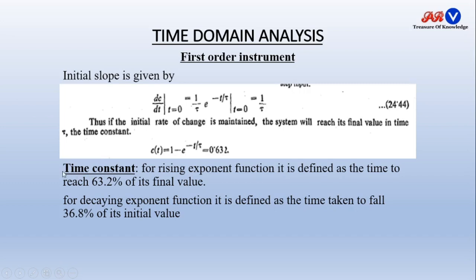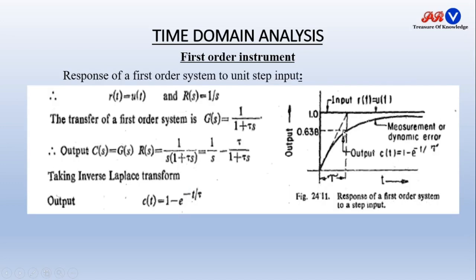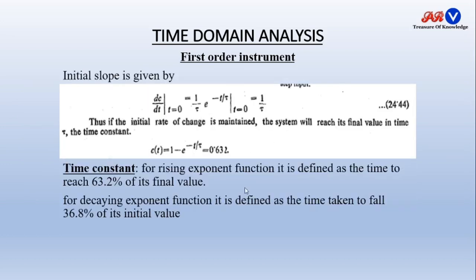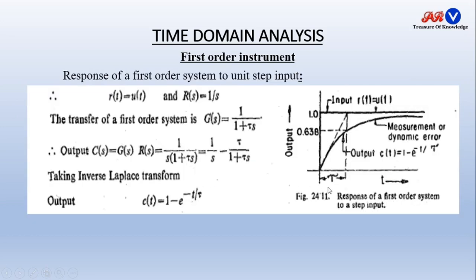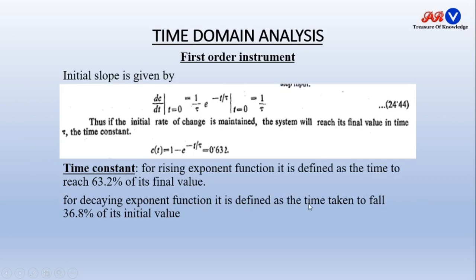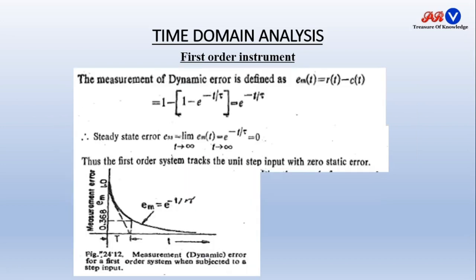The time constant is defined as follows. For a rising exponential function, time constant is the time to reach 63.2 percent of its final value. While in case of a decaying exponential function, it is defined as the time taken to fall to 36.8 percent of its final value. At 36.8 percent, it is shown in the next slide — this is the time constant τ.